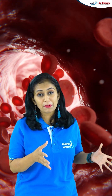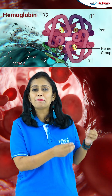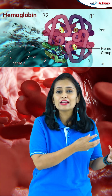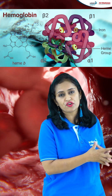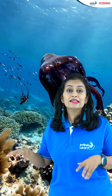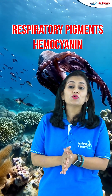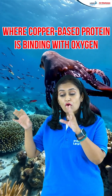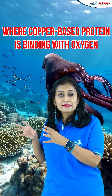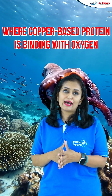Red blood, as you know in humans and other vertebrates, has the respiratory pigment hemoglobin, where the binding metal is iron, which binds with oxygen. But in the case of the octopus, the respiratory pigment is hemocyanin, where copper is the binding element with oxygen.